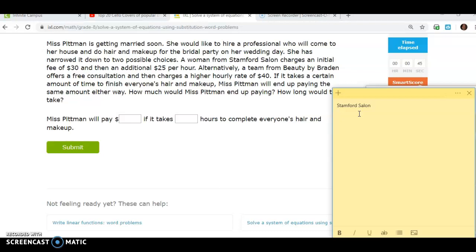So it starts with an initial fee. Remember a starting fee or an initial fee, flat fee, all of that means that's my Y intercept. So she starts with $30. And, so and means plus, an additional $25 per hour. If I use that expression, $30 plus $25, I would figure out how much it's going to cost her to do the hair and makeup by the hour. So that means X represents hours and Y represents total money spent. That's the equation for Stanford.